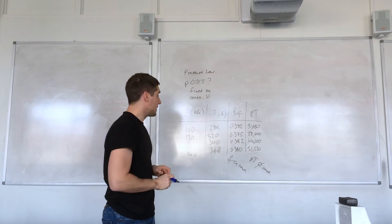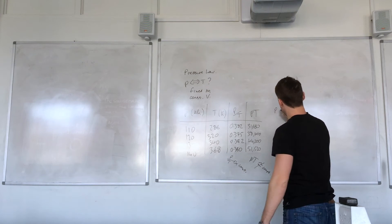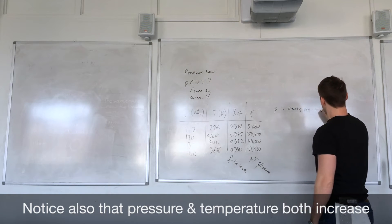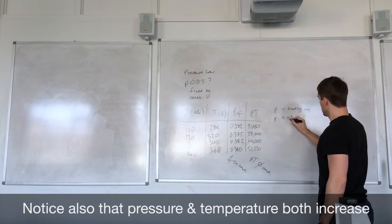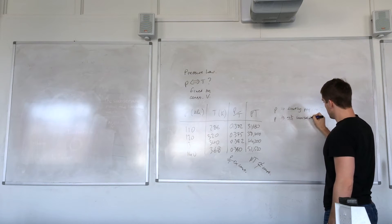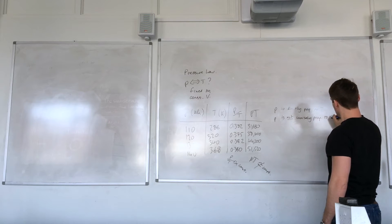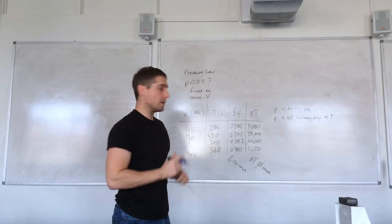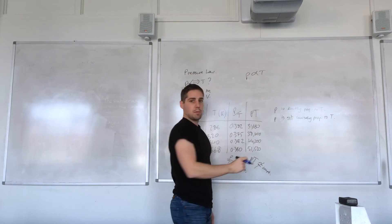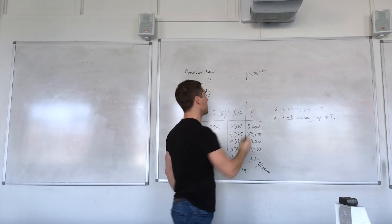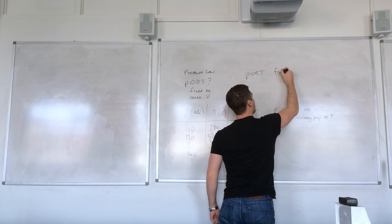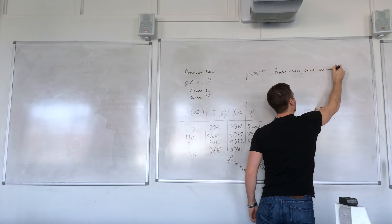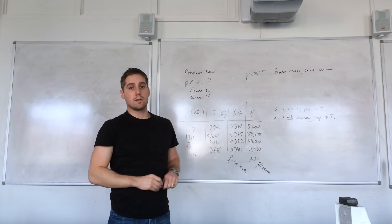So our conclusions then would be pressure is directly proportional to temperature, and P is not inversely proportional to the temperature. Those are our conclusions. That means we can now state what the pressure law is. And that is that pressure is directly proportional to the temperature for a fixed mass of gas at constant volume.